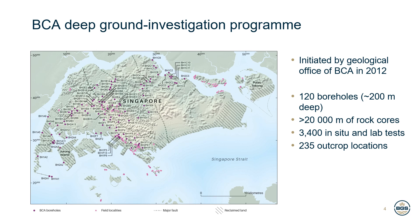Data and material derived from the BCA deep ground investigation programme are extensive. They include approximately 120 boreholes, each 200 metres deep, from which over 20,000 metres of rock cores were recovered and logged, 3,400 in situ and laboratory tests, and a further 235 outcrops examined by the BGS. This programme represents one of the most comprehensive city-scale geological investigations ever undertaken, especially considering the depths from which the cores were recovered.